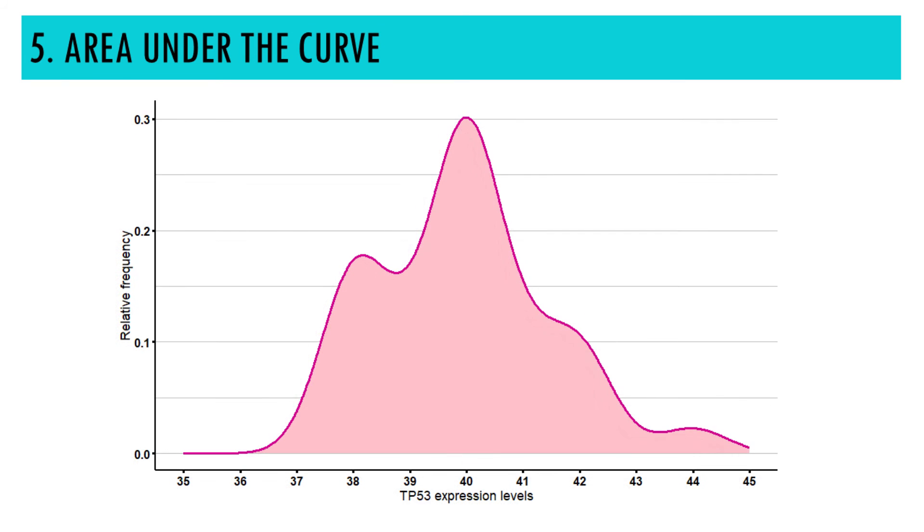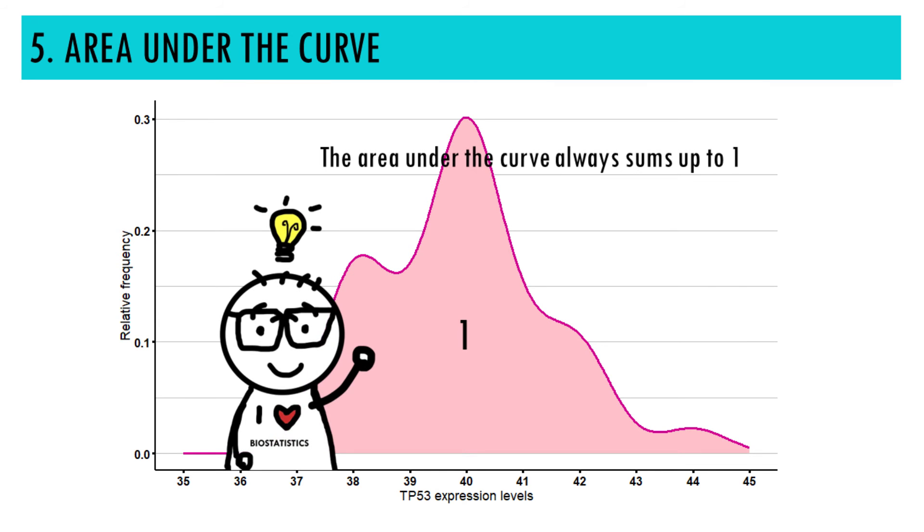This means that the area under the curve always adds up to 100%, or 1 if we're talking about relative frequencies, and that the curve will never go under the x-axis because frequencies and probabilities can never be under 0.